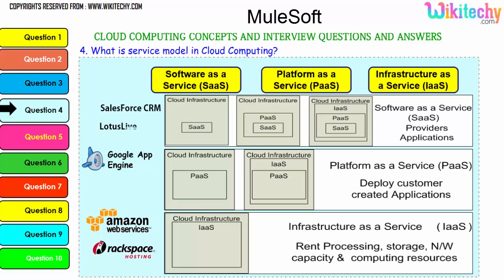For Software as a Service, the software is placed in the operating system which is placed in the infrastructure — you can only change application settings. For Platform as a Service, the platform OS is given, placed in the server — you can put any application or software you want. For Infrastructure as a Service, only the server is given — you choose your OS and applications. Examples: SaaS — Lotus Live and Salesforce CRM; PaaS — Windows Azure and Google App Engine; IaaS — Amazon Web Services and Rackspace Hosting.